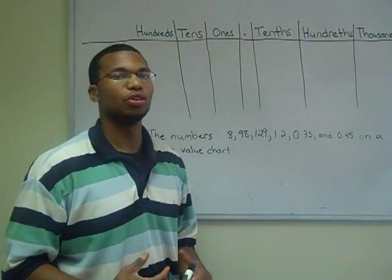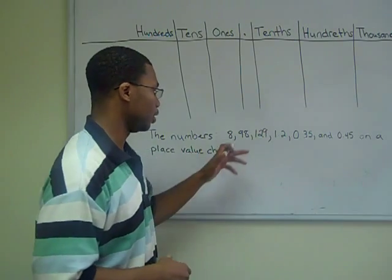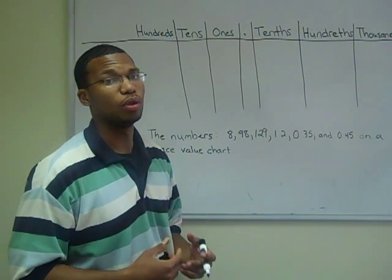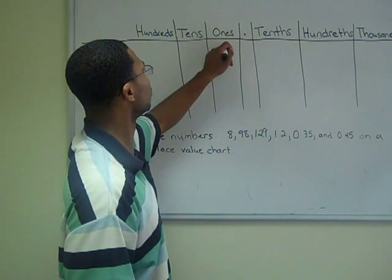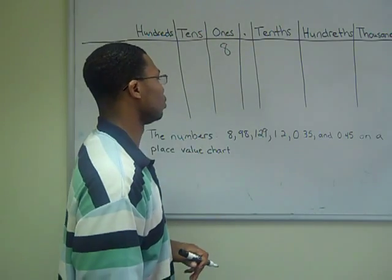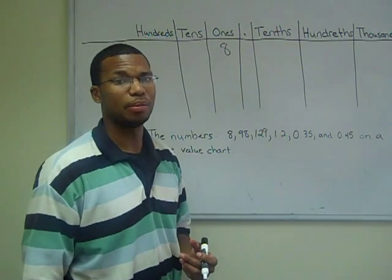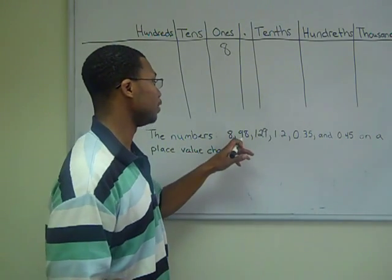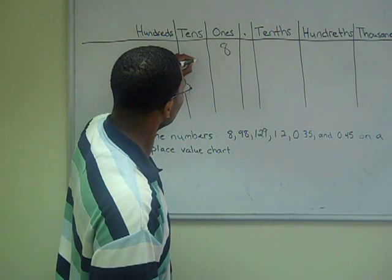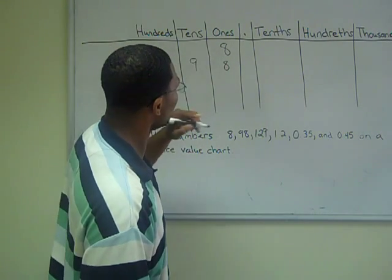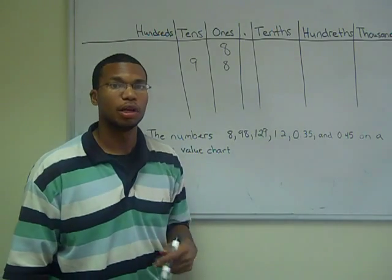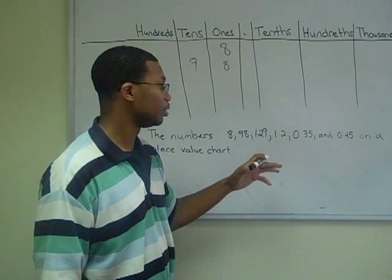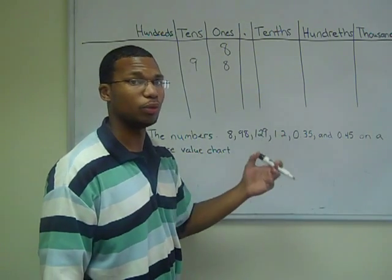I'm going to place some numbers on a place value chart. The number 8 has 1 digit, so the number 8 will only go into the ones place. The number 98 has 2 digits and no decimal point, so therefore it is comprised of 9 tens and 8 ones. The number 129 has 1 hundred, 2 tens, and 9 ones.